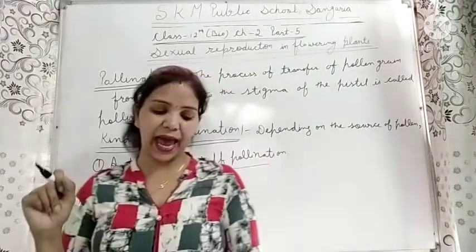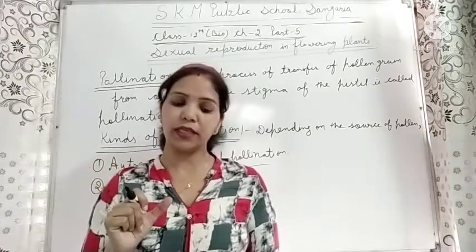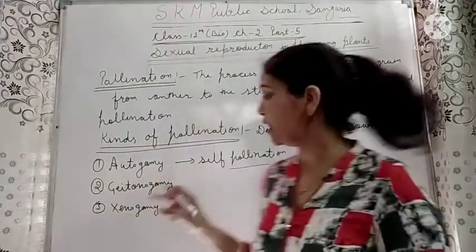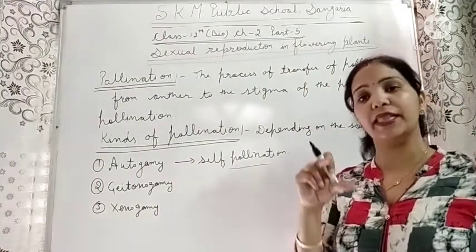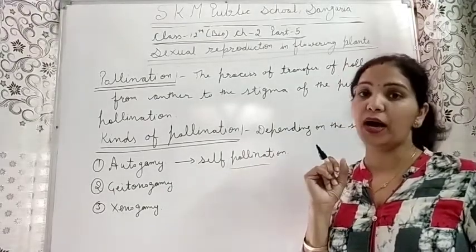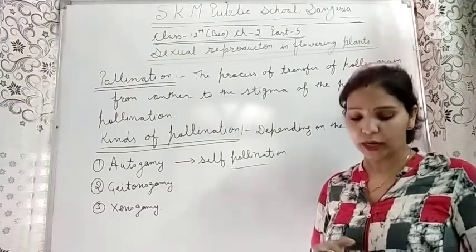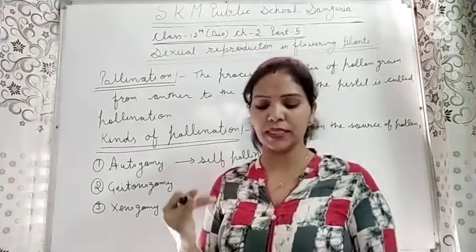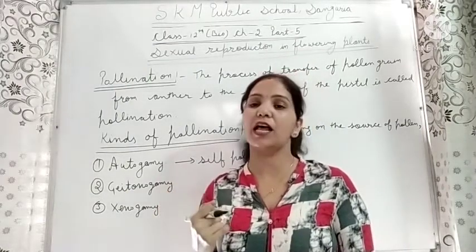For autogamy, the anther and stigma should lie close to each other so that self-pollination can occur. There are two adaptations in plants that favour self-pollination. Some plants such as Viola, Oxalis, and Commelina produce two types of flowers.